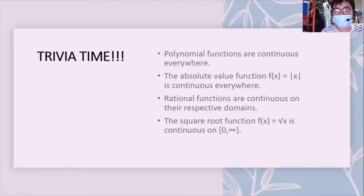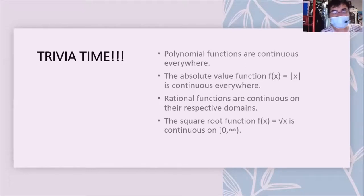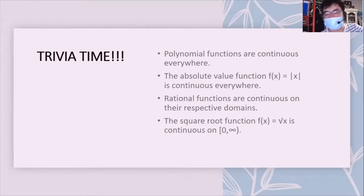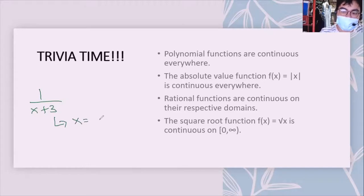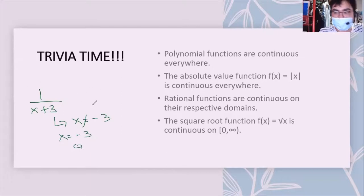Trivia: Polynomial functions are continuous everywhere — pag in-evaluate mo sila using any value, may value pa rin siya. Absolute value functions are also continuous everywhere. However, rational functions are continuous on their respective domain. For example, 1/(x+3) — the restricted value is x = -3, so this function is not continuous at x = -3.